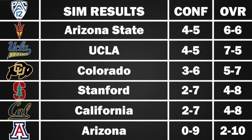Arizona State had a pretty good year at 6-6 overall, 4-5 in the Pac-12 — a little better than most would expect. They beat Southern Utah, Fresno State, Cal, Colorado, UCLA, and Arizona. They lose to Oklahoma State, USC, Washington, Washington State, Utah, and Oregon — all teams that finished pretty high in the simulation.